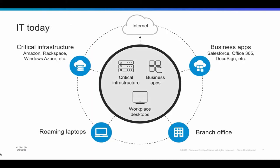What we're seeing today — and you're probably facing this as well — is that you have a lot of your critical infrastructure starting to move to the cloud, as well as your business applications. So you're using Salesforce.com and Office 365 and other cloud apps. You have your data now housed in those areas, making it easier for users to access that data and work from anywhere. Roaming laptops no longer need to connect to the VPN; they can just work from anywhere.